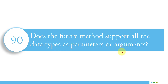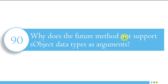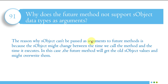The next question is: does the future method support all data types as parameters? This can also be asked as 'what parameters are supported or not supported by future methods?' No — future methods only support primitive data types or collections of primitives, and do not support SObject as an argument. That means you can use Integer, String, Boolean, and similar types, as well as collections of primitives, but you cannot pass an SObject directly.